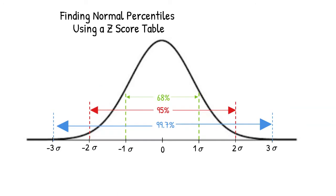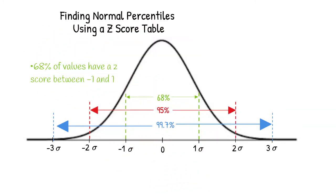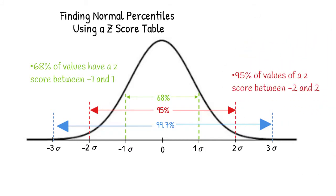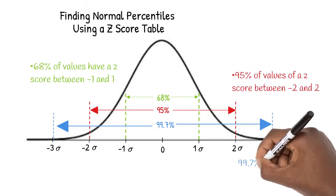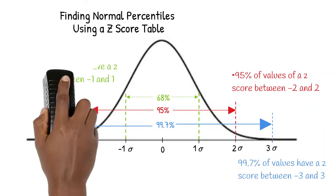We also learned that the z-score tells us the number of standard deviations a value is away from the mean. We learned that 68 percent of values are within one standard deviation from the mean, 95 percent of values are within two standard deviations from the mean, and 99.7 percent of values are within three standard deviations from the mean.